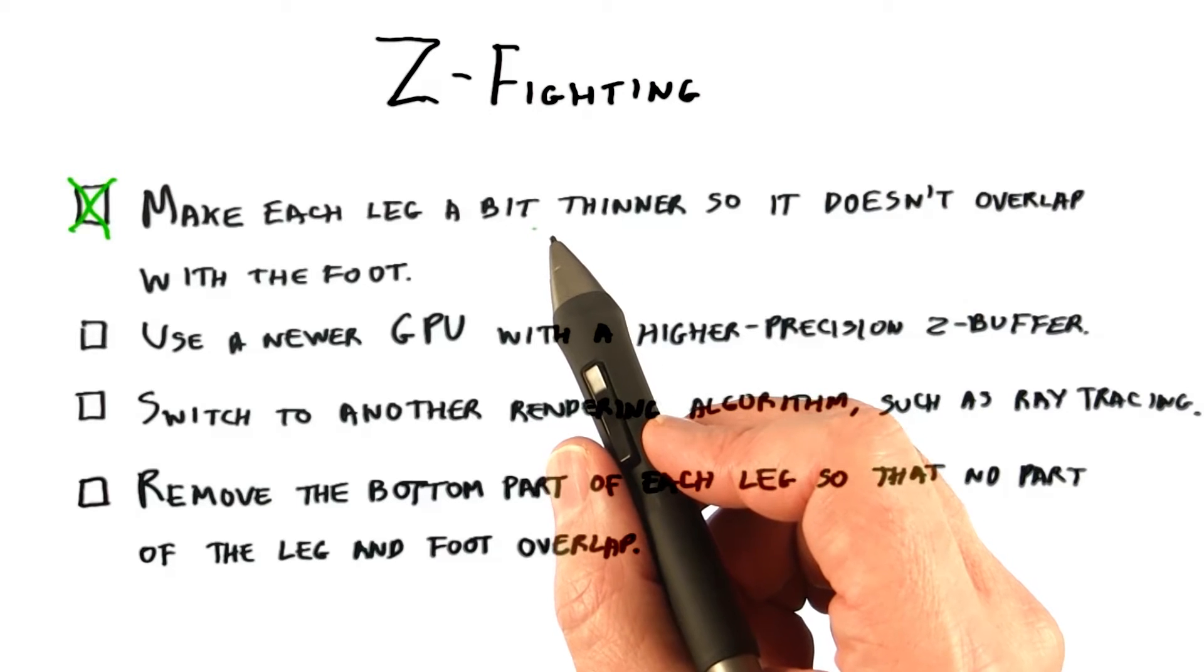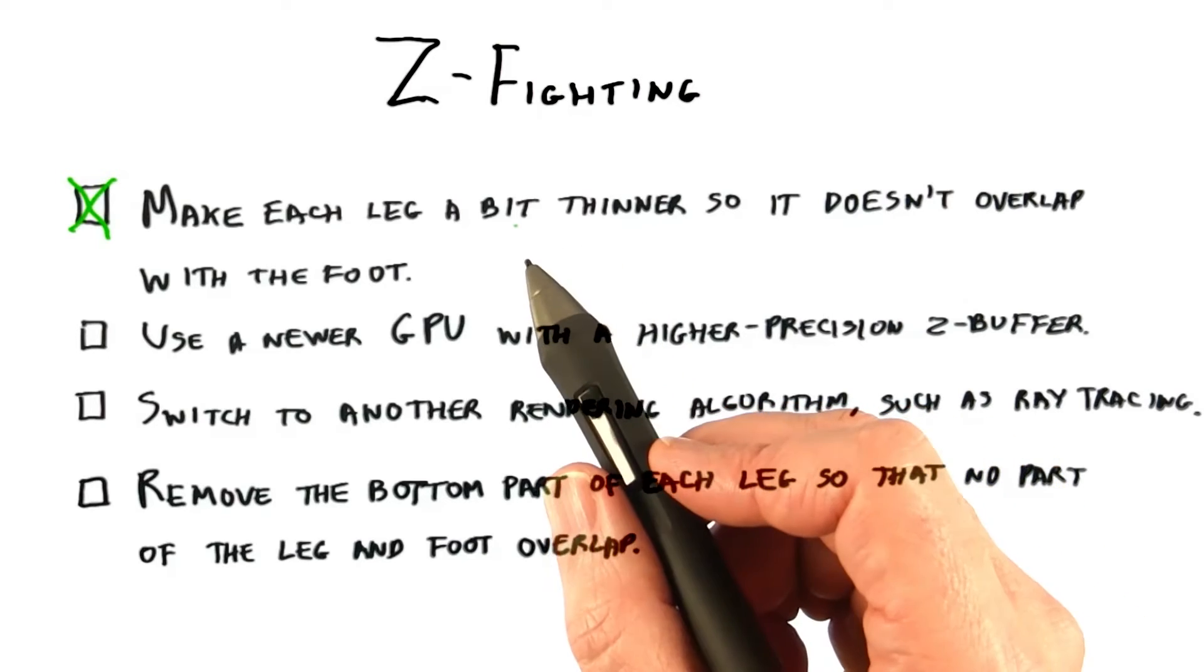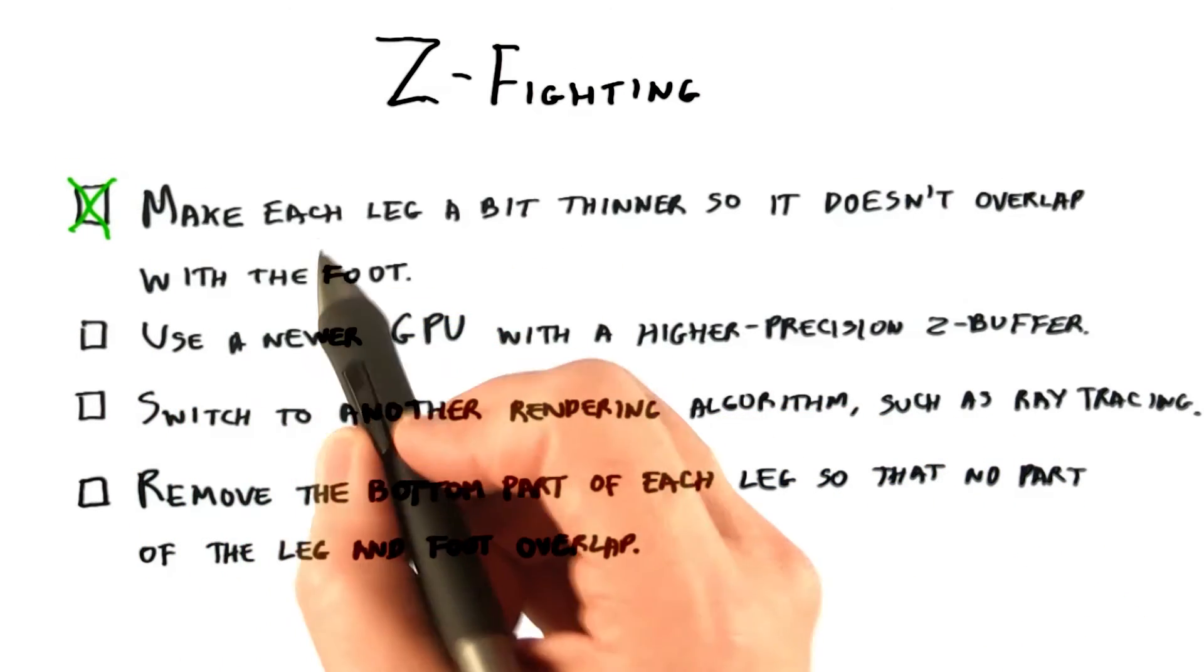Also, even surfaces that are near each other can still have z-fighting problems, since the z-buffer has limits on its precision. So, this solution works, but is not optimal.